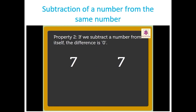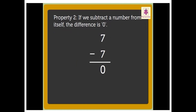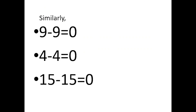The second property is: if we subtract a number from the same number, we get zero. For example, seven minus seven is equal to zero. Similarly, nine minus nine is equal to zero, four minus four is equal to zero, and fifteen minus fifteen is equal to zero. So we can say that if we subtract a number from the same number, we will get zero.